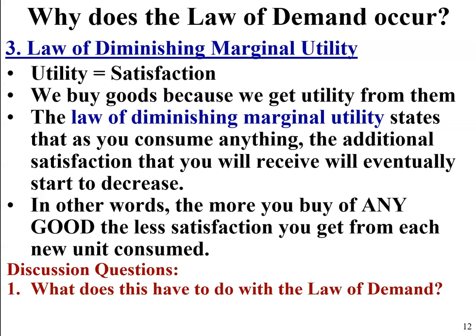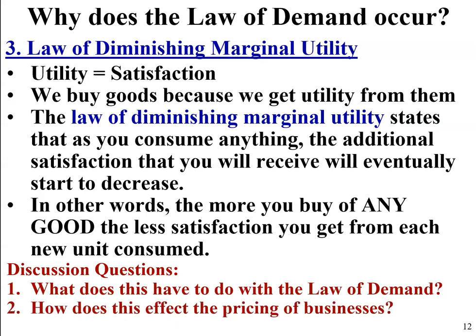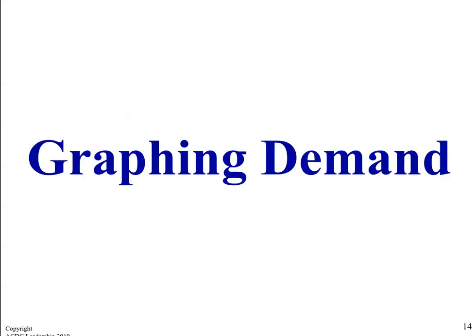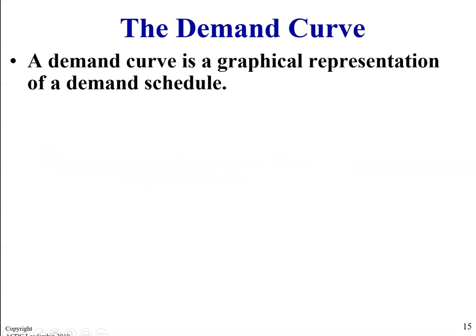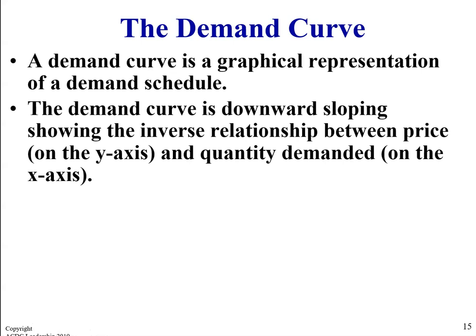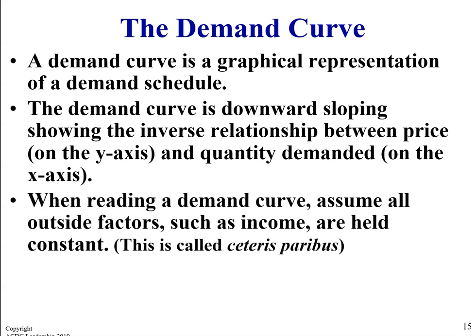What does this have to do with the law of demand, and how does it affect the pricing of businesses? Hopefully we'll answer those questions. Let's look at how we graph demand — the demand curve. A demand curve is a graphical representation of a demand schedule. The demand curve is downward sloping, showing the inverse relationship between price on the y-axis and quantity demanded on the x-axis. When you read a demand curve, you assume all outside factors such as income are held constant — we call this ceteris paribus.